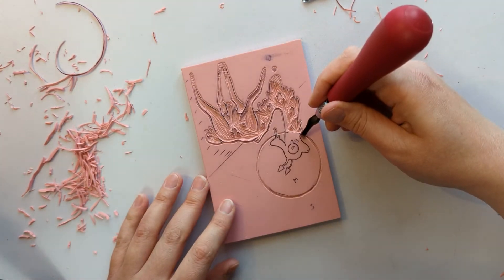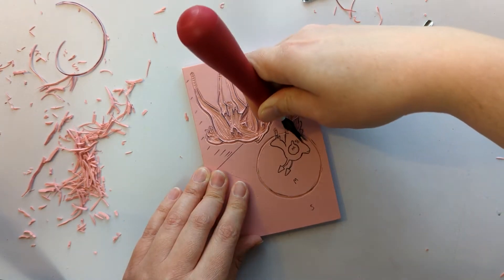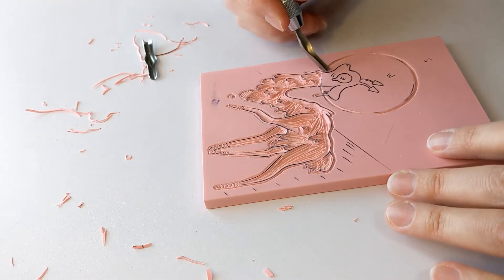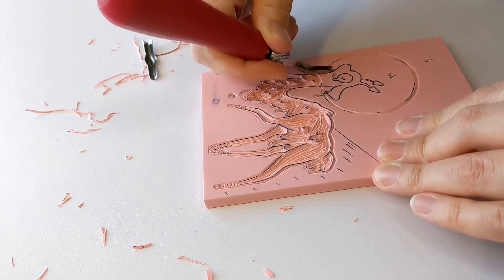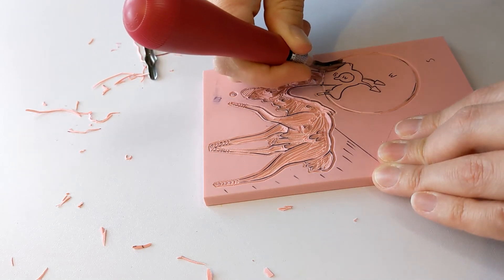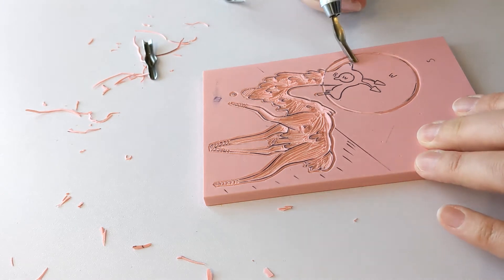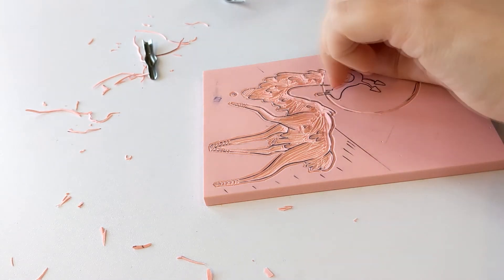So yeah, I just have the three tips with my carving tool that it came with. And I just kind of alternated between the really fine tip and the medium tip for the most part. And then I used the really big tip to sort of carve out the rest of the moon. But that was about it.